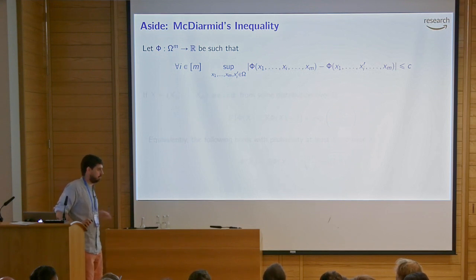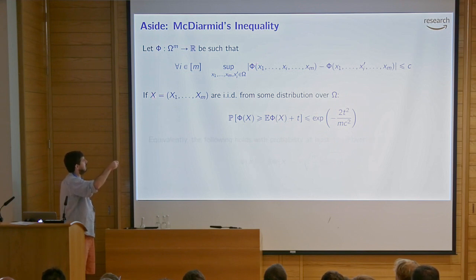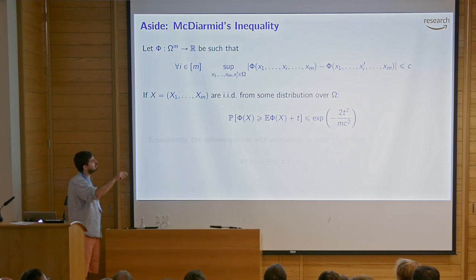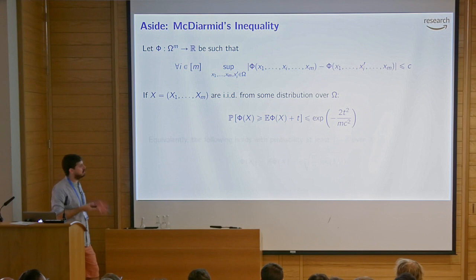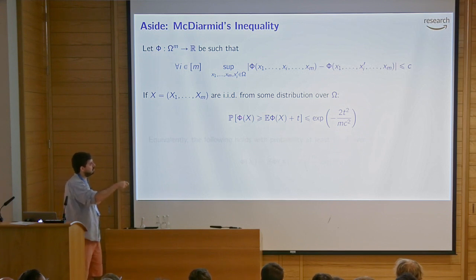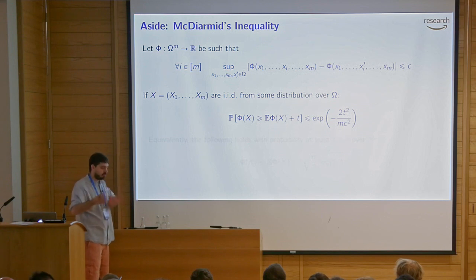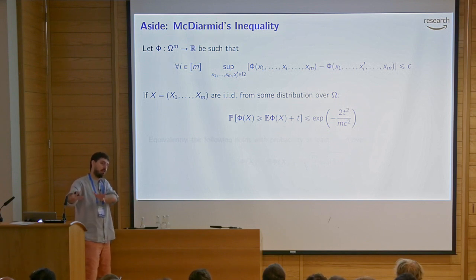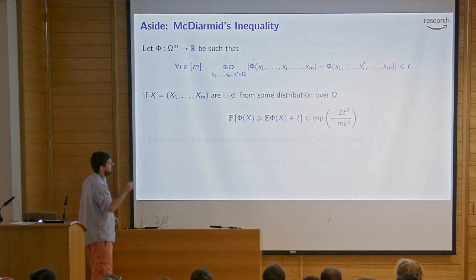If this function has bounded differences and we evaluate phi on a random variable x = (x_1, ..., x_m) which are i.i.d. copies from any distribution on omega — you can even just need independence, not necessarily identically distributed — then you get a concentration bound: the probability that phi of x goes very far from its expectation decreases exponentially in t squared. This is useful because we know the Hankel matrix's expectation depends on the automaton. If we can show what we get from data is close to its expectation, we can apply all these perturbation results.